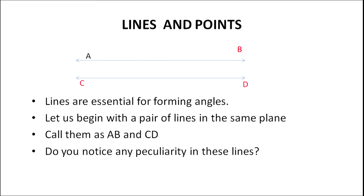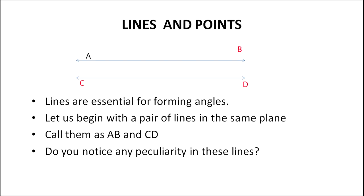As you all know, lines are essential for forming angles. For convenience, I will begin with two lines, say, line AB and line CD. It should be remembered that capital letters should be used for marking the points on the line. Do you notice any peculiarity in these lines — about the lines AB and CD? Do they ever meet or do they ever intersect?